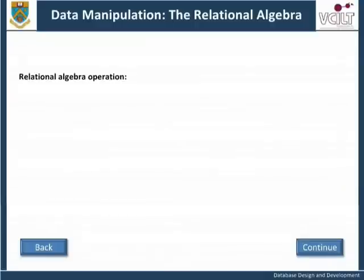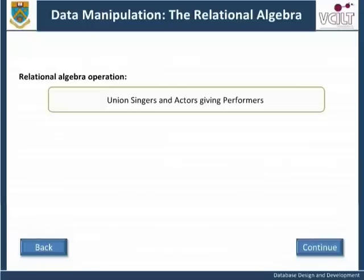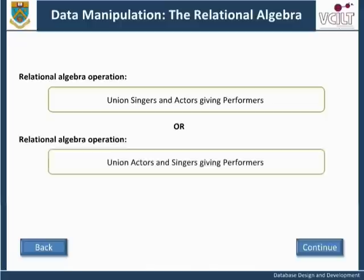Relational Algebra Operation: Union Singers and Actors giving Performers. Or, we could also express this as: Union Actors and Singers giving Performers. These two operations would generate the same result; the order in which the participating relations are given is unimportant. When an operation has this property, it is known as commutative. Other examples of this include addition and multiplication in arithmetic. Note that this does not apply to all relational algebra operations.